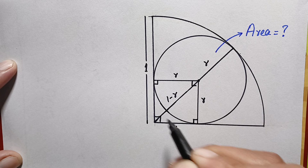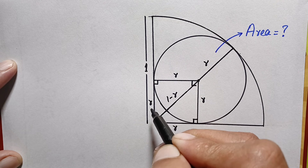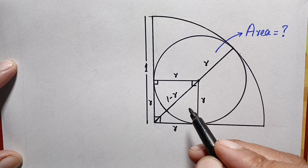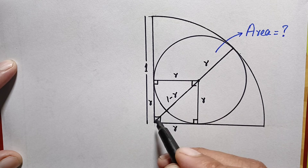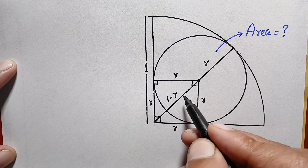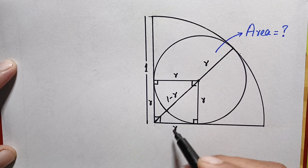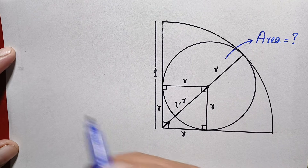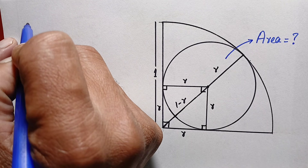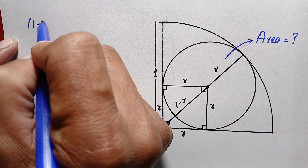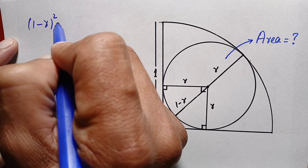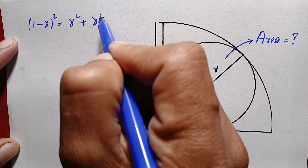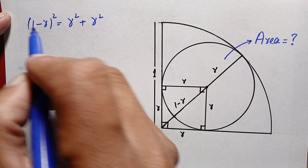Since all sides of the square are equal, this side will be small r and this side will also be small r. Now our target is to find the value of r, so here we will apply the Pythagorean theorem on the right angle triangle where the hypotenuse is one minus r, the perpendicular is r, and the base is r. By the Pythagorean theorem: hypotenuse squared equals base squared plus perpendicular squared, so (1 − r)² = r² + r².